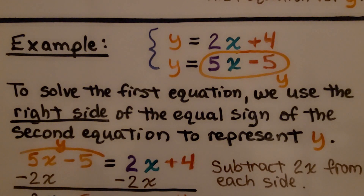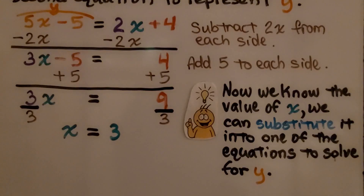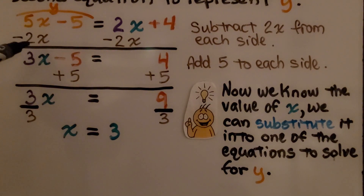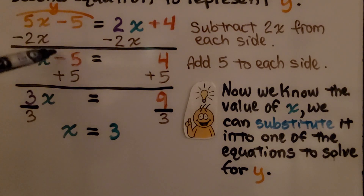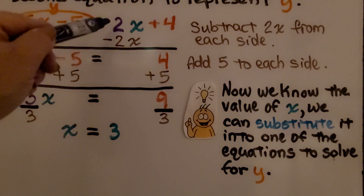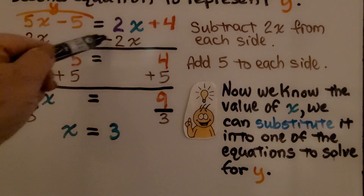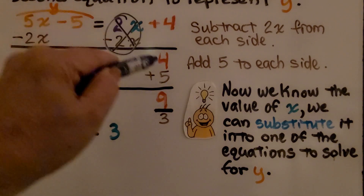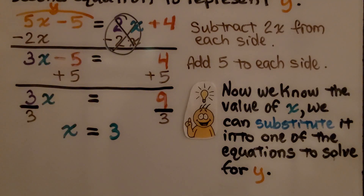Now we can just do inverse operations and subtract 2x from both sides. When we do 5x minus 2x, we get 3x. We drop down our minus 5 and our equal sign. We have positive 2x minus 2x, which creates a zero pair and eliminates it, leaving just 4 on that side.